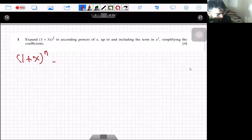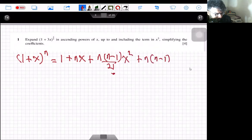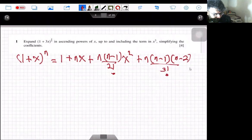So if you expand it what you will get: 1 + nx + n(n-1)/2! multiplied by x² + n(n-1)(n-2)/3! multiplied by x³.